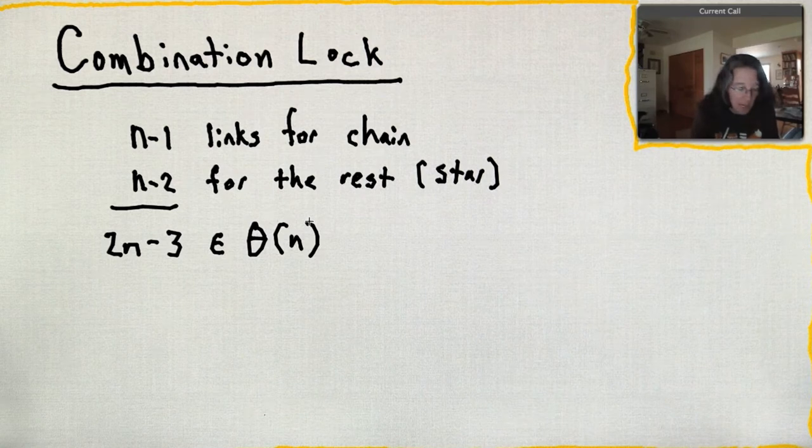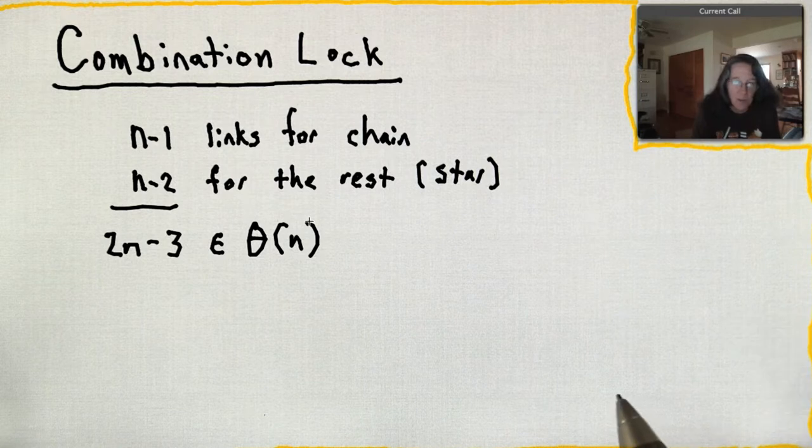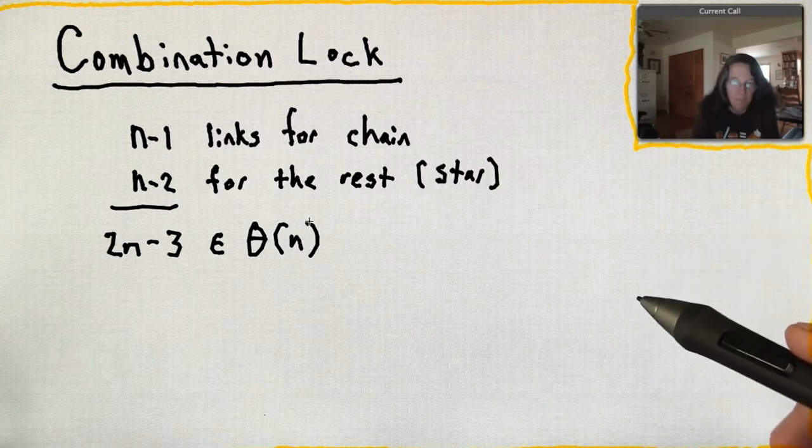Okay, I mean, n minus 1 links to get the chain, and then n minus 2 links to get all of the rest, so that's a total of 2n minus 3, which is theta of n, right? Yeah.